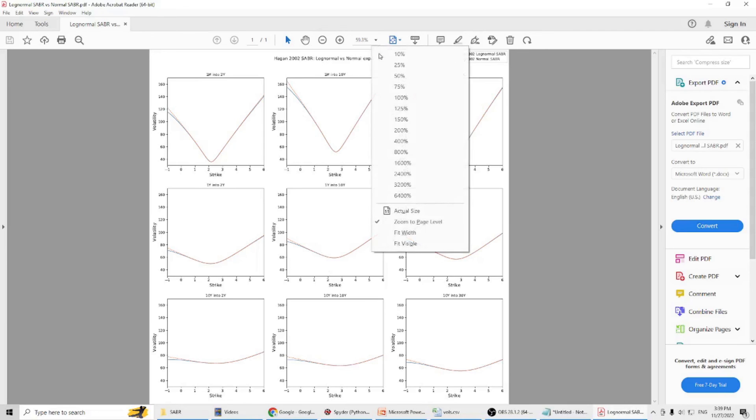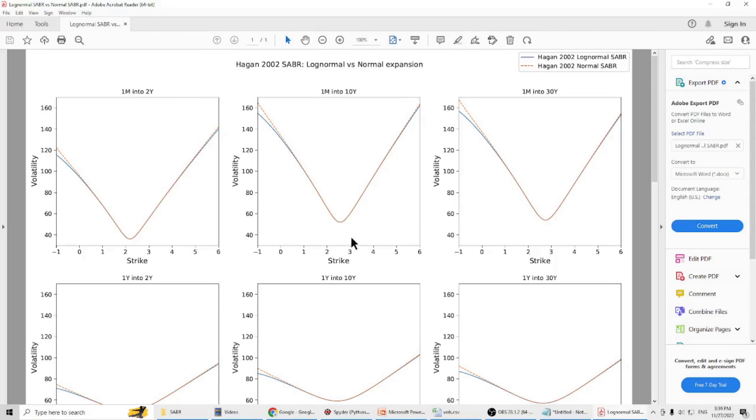If you make it larger, you can see clearly. On the right side, it's almost the same, although some difference here. But on the left side, when the strike price is very low, it has larger difference.